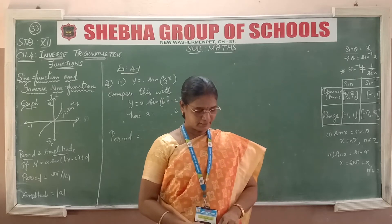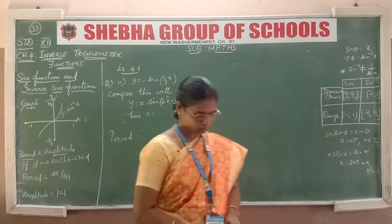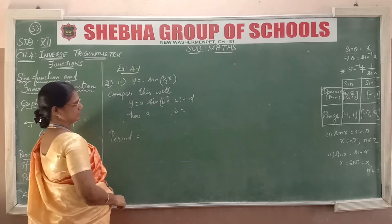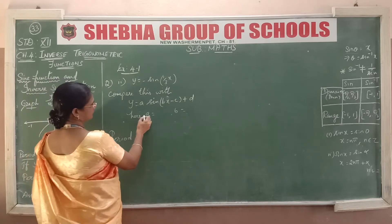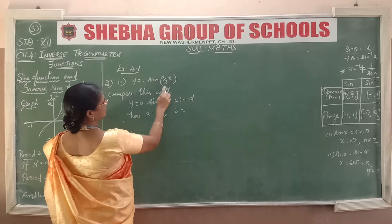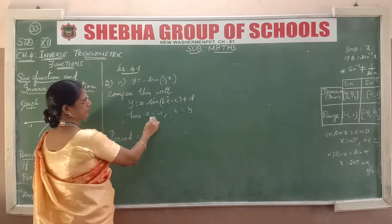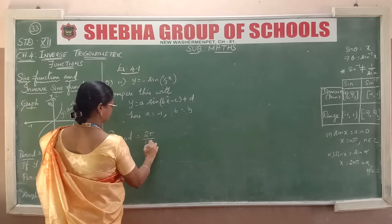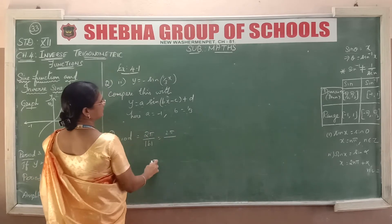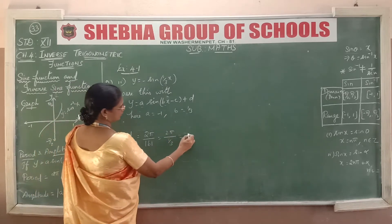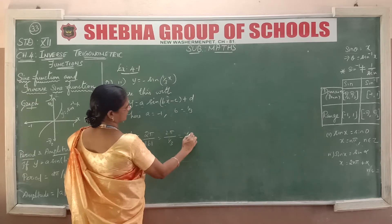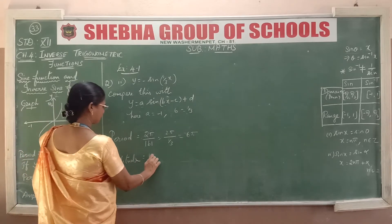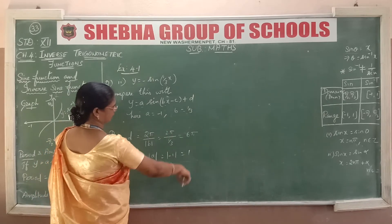Next, find the period and amplitude. The second subdivision: y = -sin(x/3). Comparing with y = a·sin(bx - c) + d, here a = -1 and b = 1/3. Period = 2π / |b| = 2π / (1/3) = 6π. Amplitude = |a| = |-1| = 1.